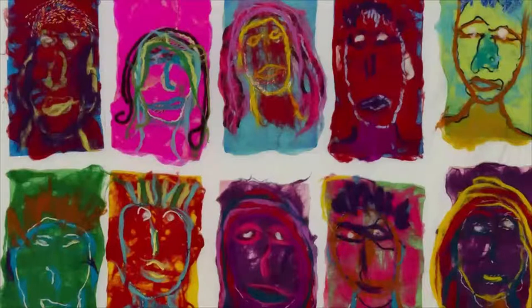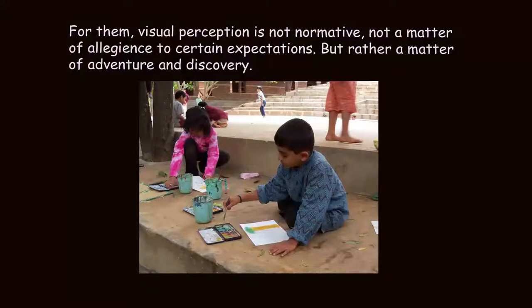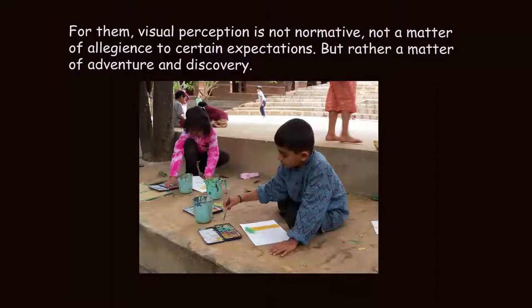Now look at this painting by a child, which is full of faces of various kinds. Looking at these faces from a conventional point of view, they may look very ugly, but for the child these faces are not ugly — they are extremely colorful expressions. This is where visual perception gets connected to emotional expression in child art. For children, visual perception is not normative — you don't have a set of rules or prescriptions to follow. It is not a matter of allegiance to certain expectations, but rather a matter of adventure and discovery.